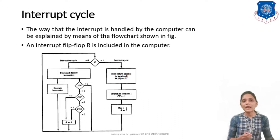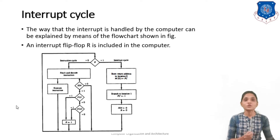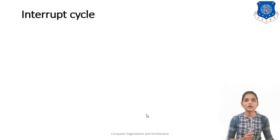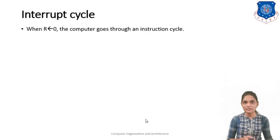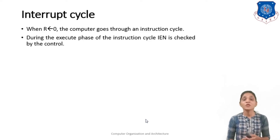By the end of this task you have to put IEN to 0 and R to 0. So this way you can use this interrupt cycle. Here we can say that when R is 0 the computer goes through the instruction cycle.